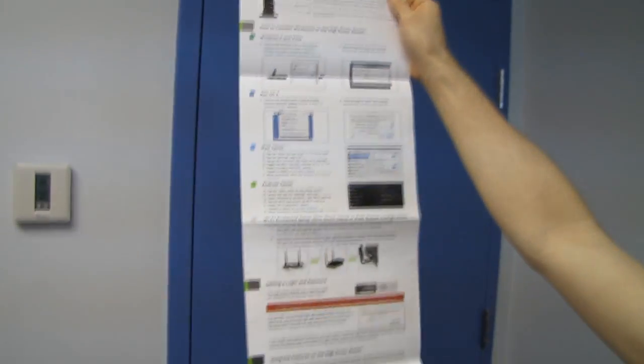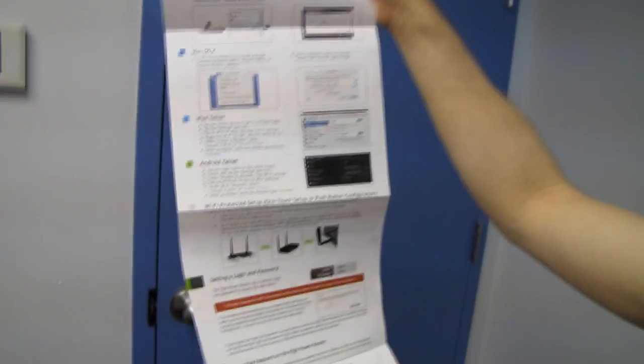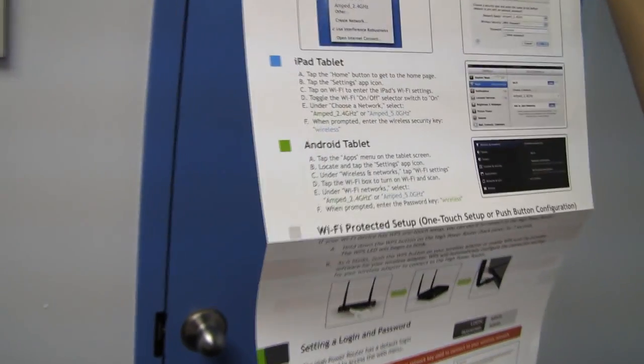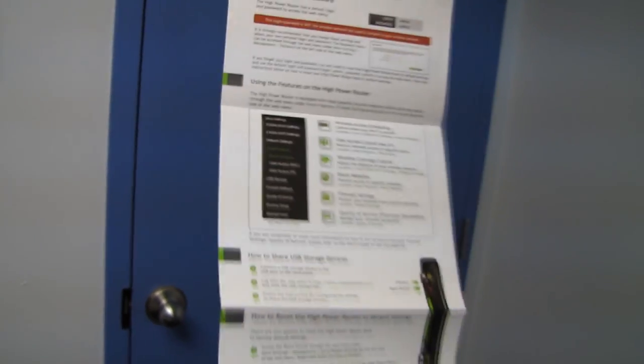How to connect wirelessly to the high power router. So how to set up the router, how to connect to it, including different operating systems and the one touch setup. This is really cool. How to share USB storage devices. Troubleshooting tips, problems and solutions. Very, very thorough. Love it.